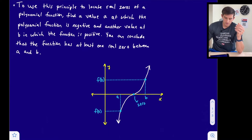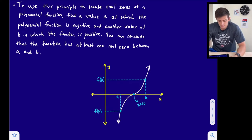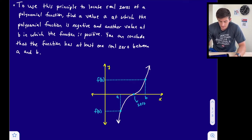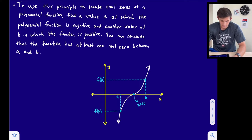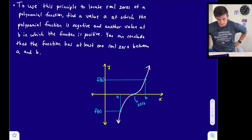To go a bit more into this principle: to use it to locate real zeros of a polynomial function, find a value a at which the polynomial function is negative and another value b at which the function is positive. You can then conclude that the function has at least one real zero between a and b.